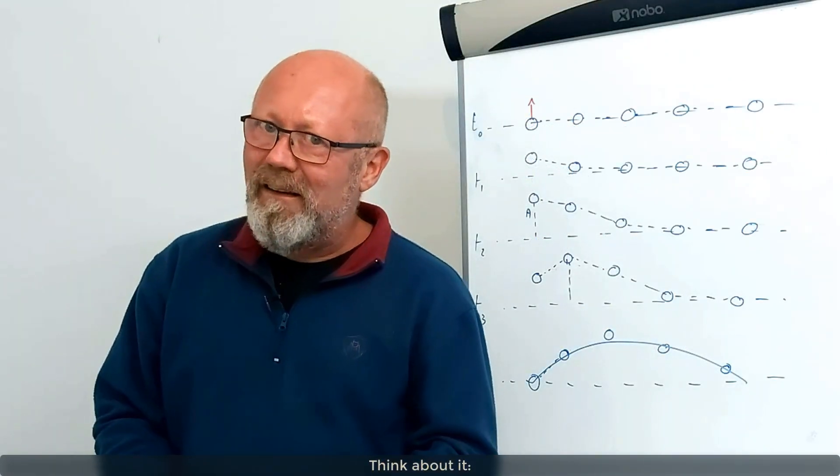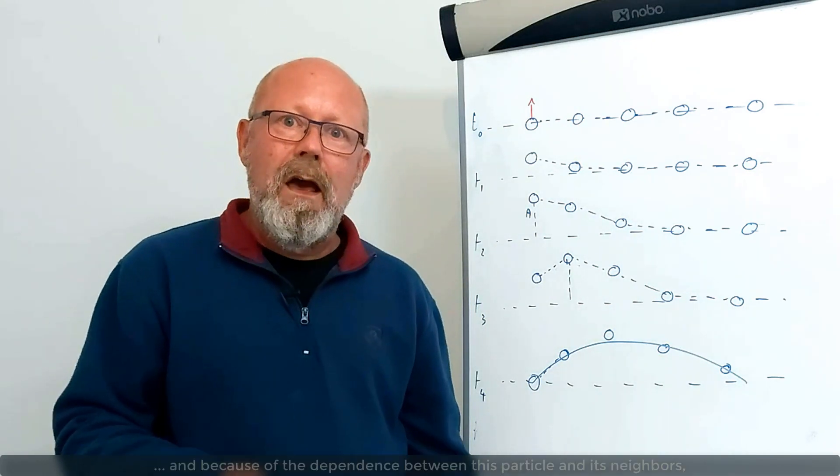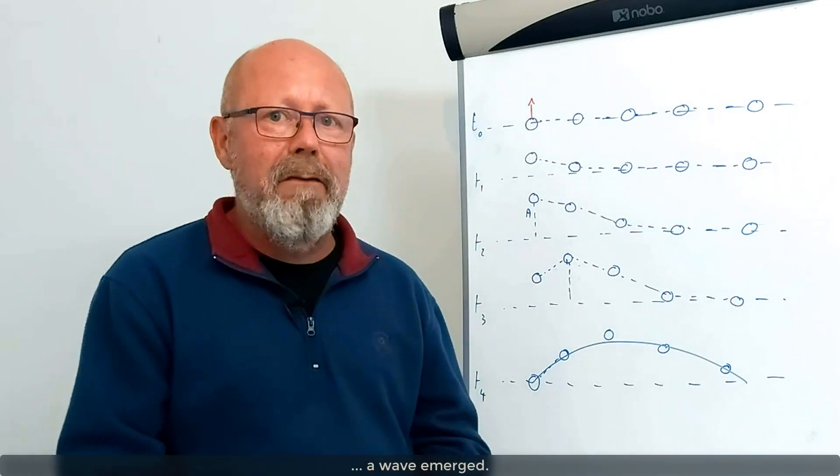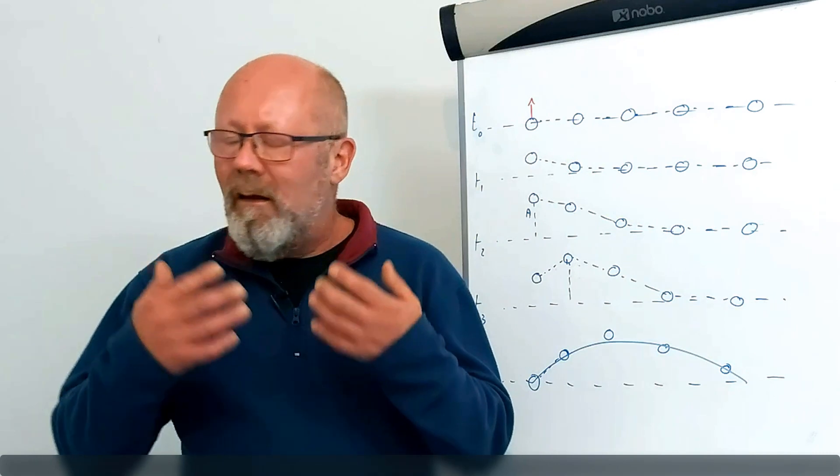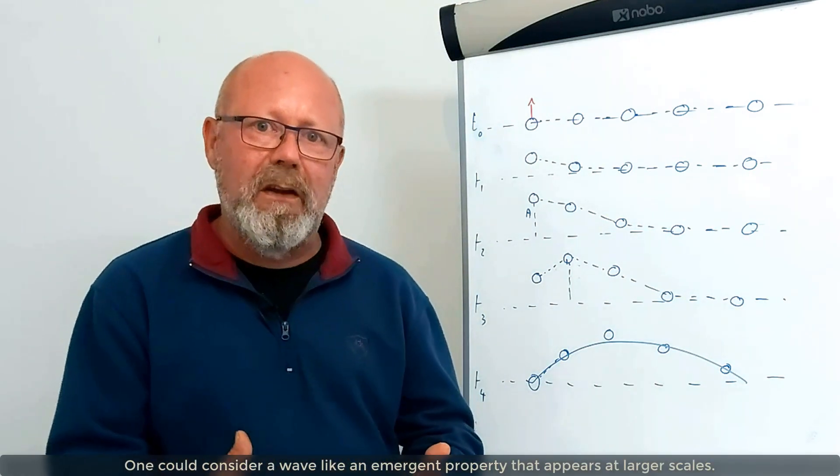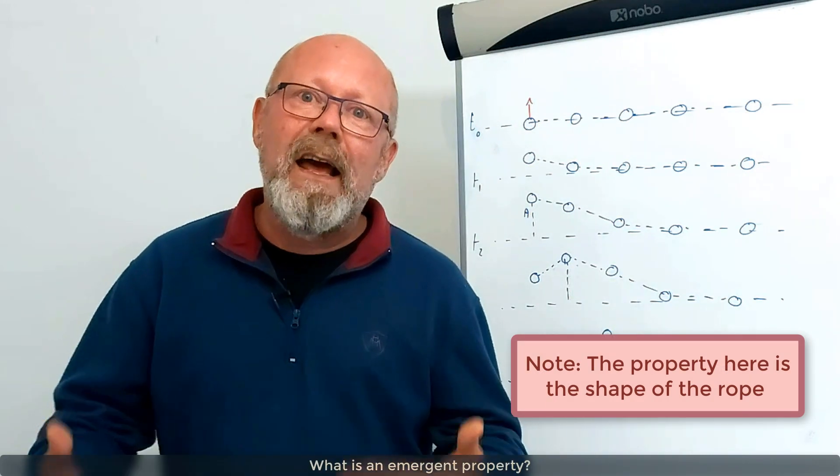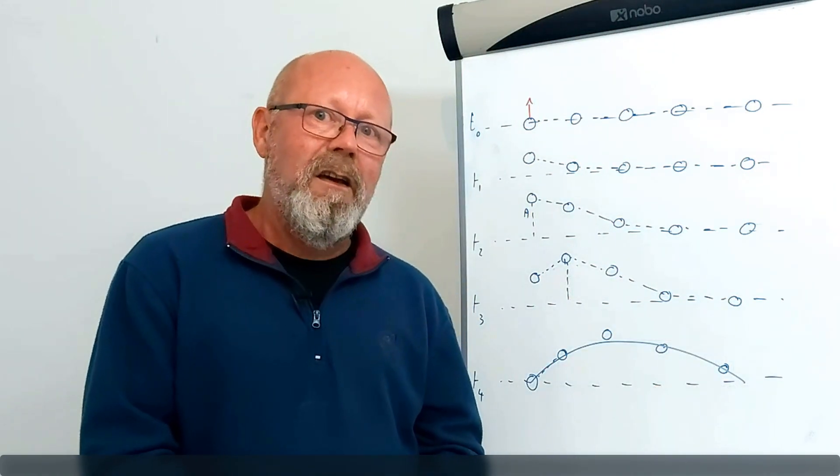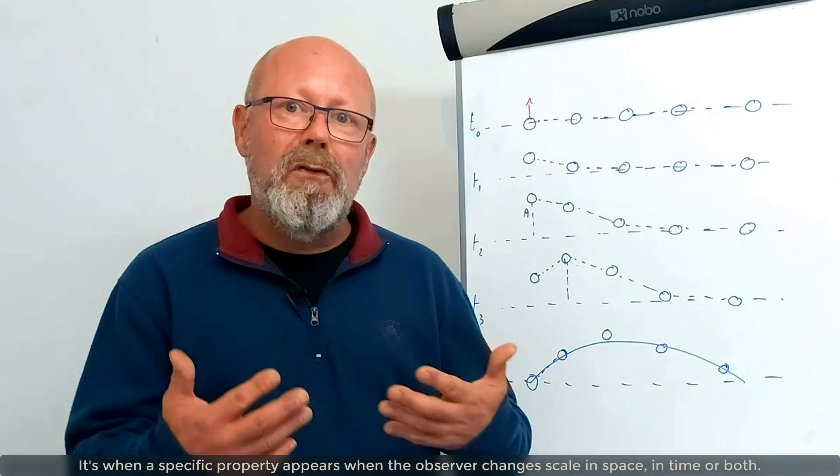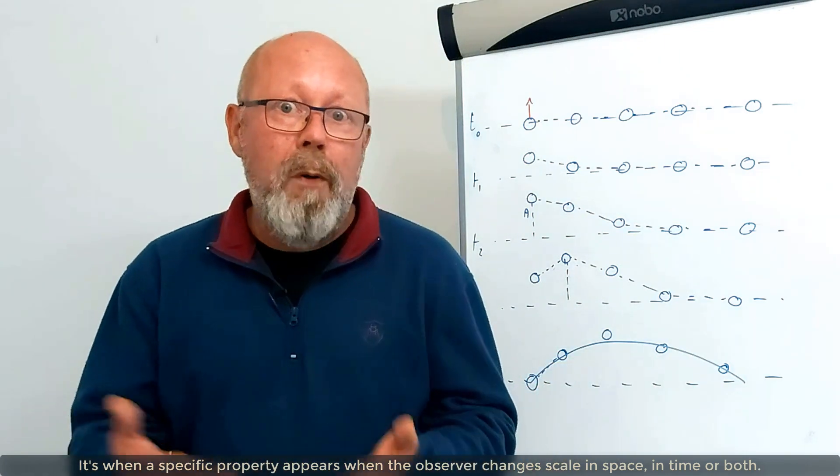Think about it. In fact, I made a single particle wiggle. And because of the dependence between this particle and its neighbors, a wave emerged. One could consider a wave like an emergent property that appears at larger scales. What is an emergent property? Well, it's when a specific property appears when the observer changes scale in space, in time, or both.